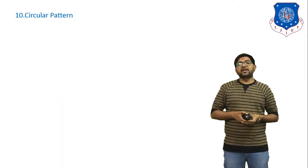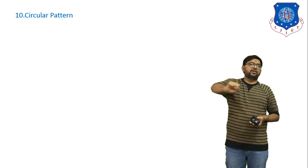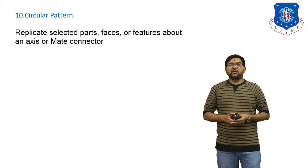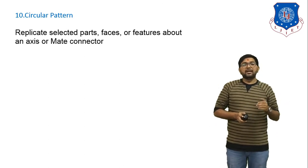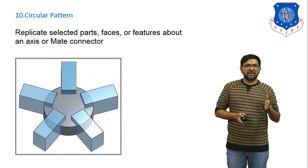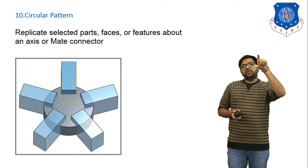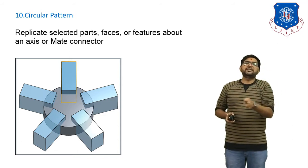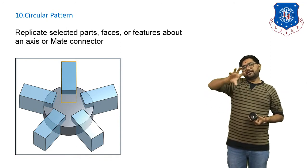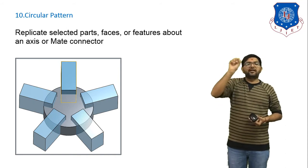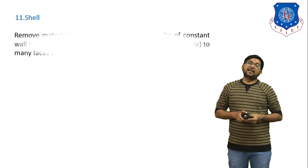Next is circular pattern. If you draw any pattern and want to repeat it in circular form, that is called a circular pattern. It replicates selected parts, faces, or features about an axis. In the example, one cube is placed on a circle, and using circular pattern, that cube is repeated around the full 360-degree periphery at a specific angle, generating multiple equally spaced cubes.